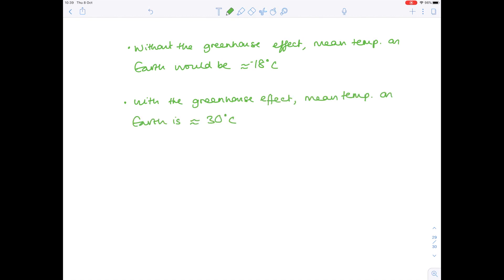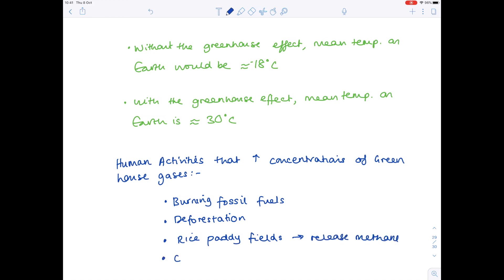Now human activities are increasing the levels of greenhouse gases leading to the enhanced greenhouse effect. Those sorts of activities include burning fossil fuels, deforestation which releases locked up carbon in the form of carbon dioxide, rice paddy fields which is a type of farming practice. They release a lot of methane as does cattle farming because when they burp they release huge amounts of methane. And they're just a few examples of human activities which are increasing the concentrations of greenhouse gases. What effect does this have?